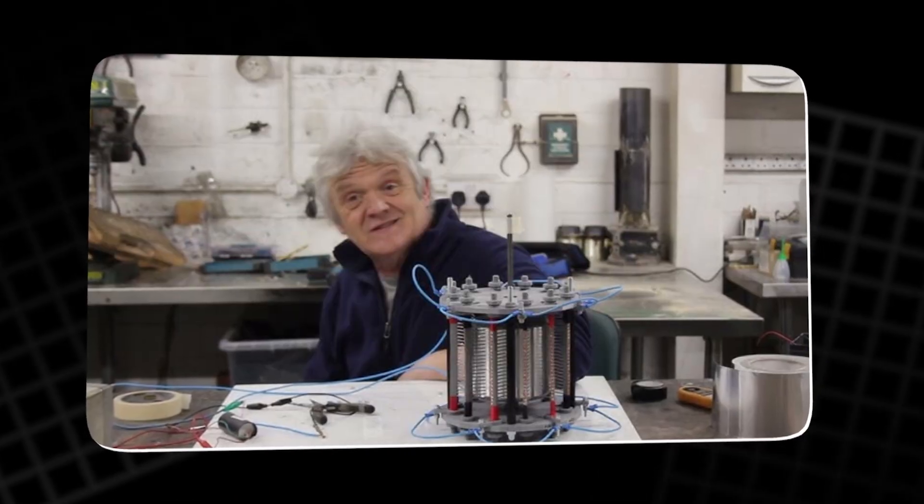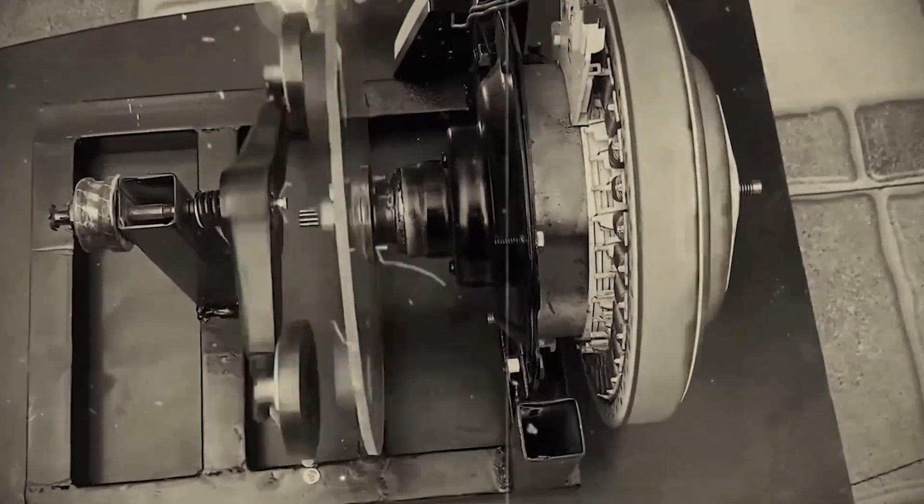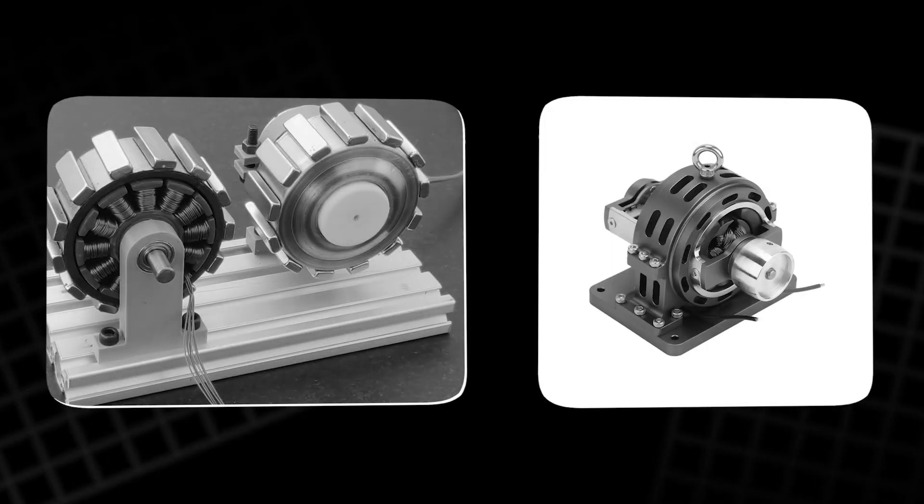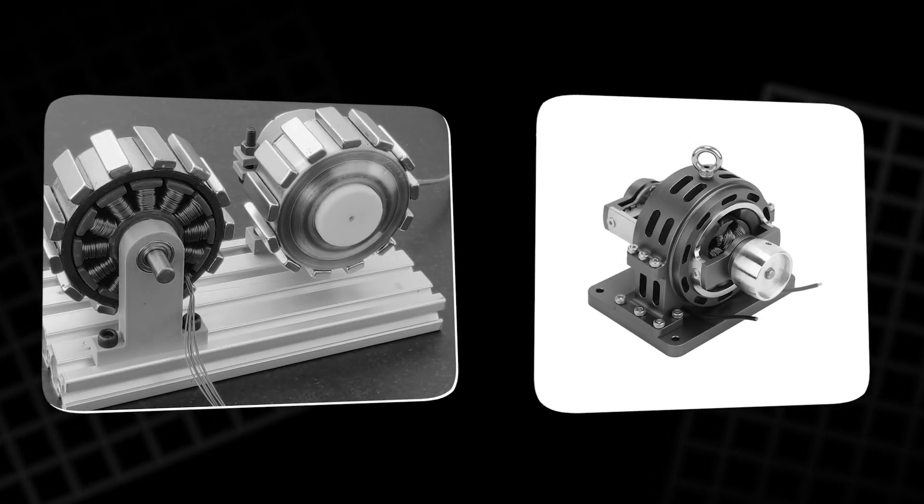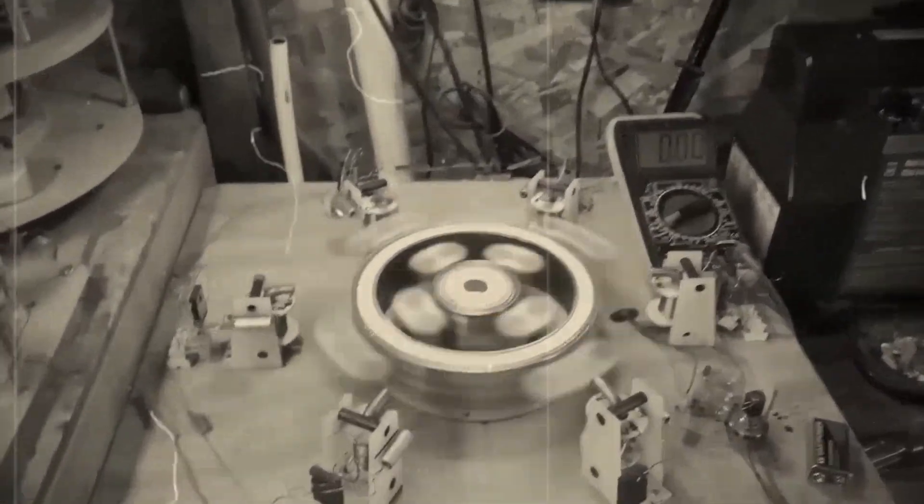To clarify how he believes the machine works, he describes its inner layout in more detail. Mechanically, the device consists of two main sections mounted on the same shaft. At the back is the receiver and motor assembly. At the front is the electrical generator section that delivers usable power.